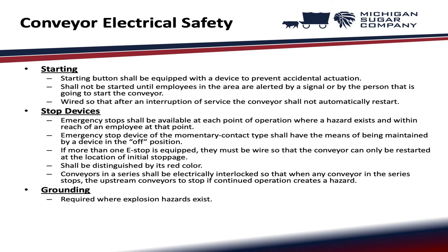Starting: Starting buttons shall be equipped with a device to prevent accidental actuation. Conveyors shall not be started until employees in the area are alerted by a signal or by the person starting the conveyor. Wired so that after an interruption of service the conveyor shall not automatically restart. Emergency stops shall be available at each point of operation where a hazard exists and within reach of an employee at that point. Emergency stop devices of the momentary contact type shall have the means of being maintained in the off position. If more than one e-stop is equipped, they must be wired so that the conveyor can only be restarted at the location of initial stoppage. Emergency stop devices shall be distinguished by their red color.